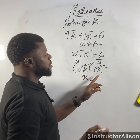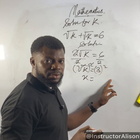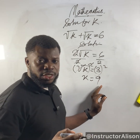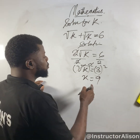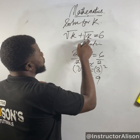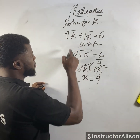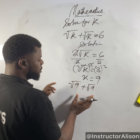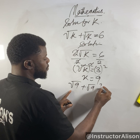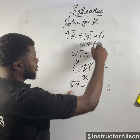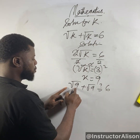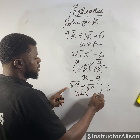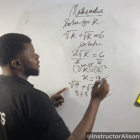Leaving us with k equal to 3 squared, which means 3 by 3 — 3 multiplied by 3 — and that gives us 9. To check whether this answer is correct, you substitute the value of k wherever you see k. So we have the square root of 9 plus the square root of 9. The square root of 9 is 3, plus 3, gives us 6. That means this answer is correct.